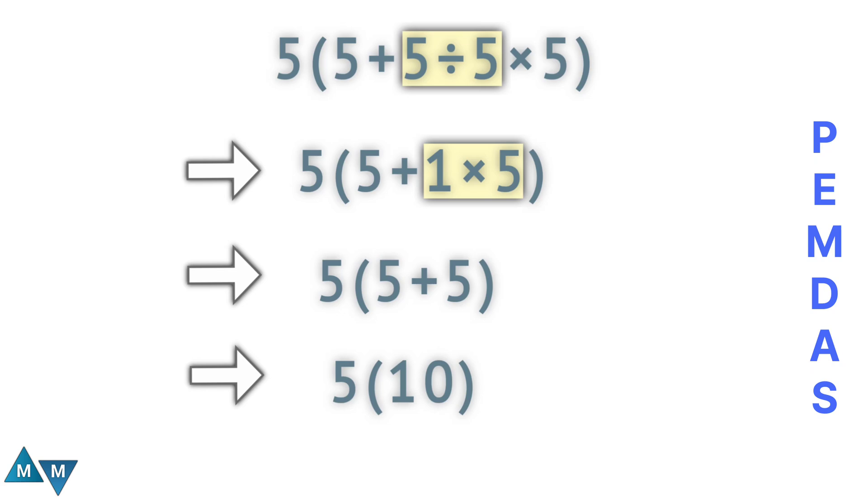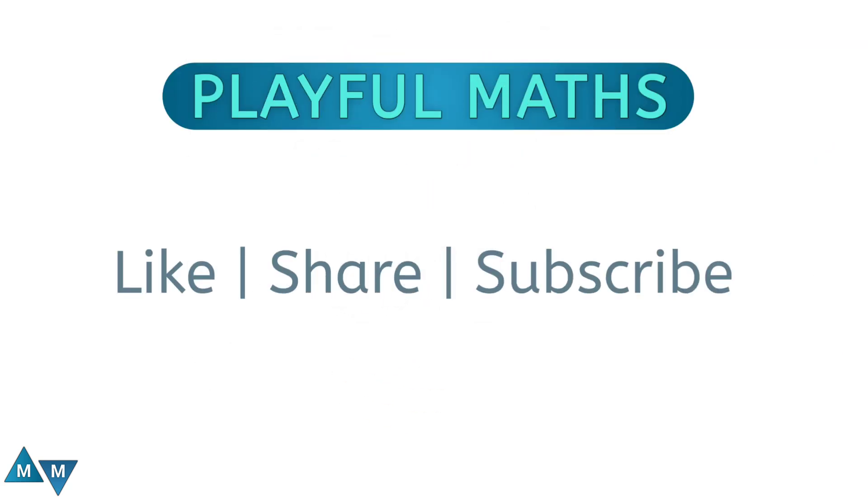So 5 next to this parentheses. Here, this is actually multiplication, and that's all we have to do. 5 times 10 is 50. This is our final answer. Hope you understand it well. Thanks for watching.